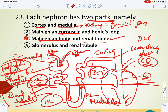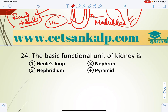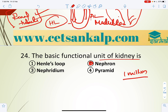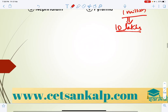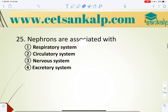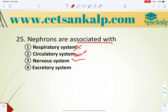The nephron is the basic functional unit of the kidney. Each kidney contains approximately one million nephrons. Nephrons are associated with the excretory system — not respiration (alveoli), circulation (blood vessels), or nervous system (neurons). With this we finish part one and will continue with part two.